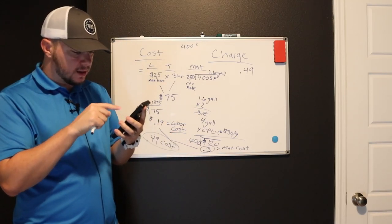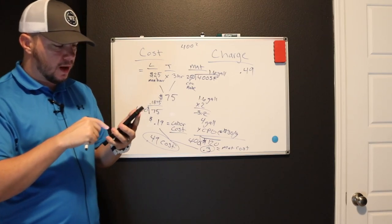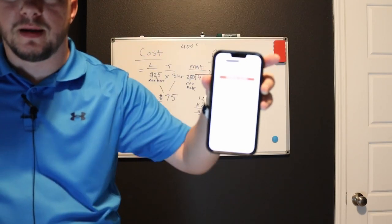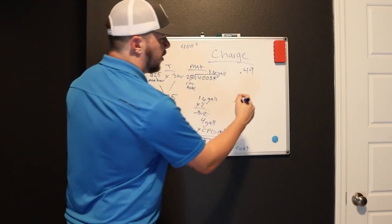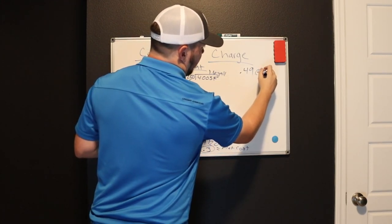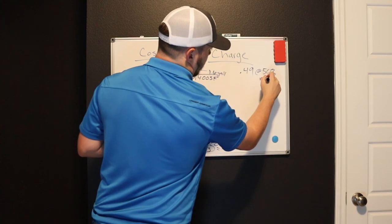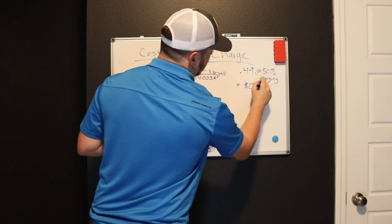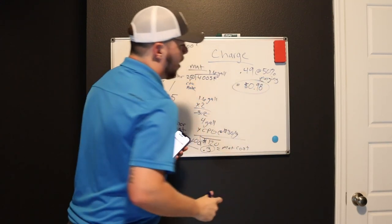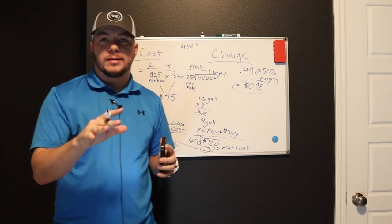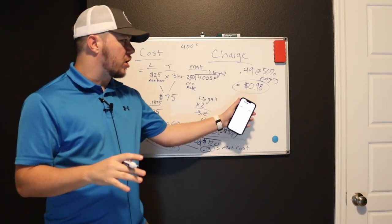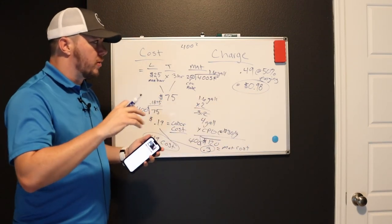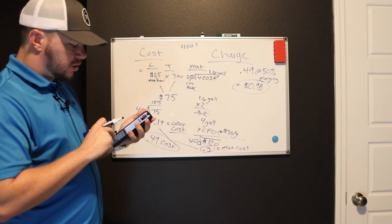If you're making 98 cents per square foot, so 49 cents at 50% margins equals 98 cents a square foot is what you need to charge for just walls. But seeing as this is not a residential we're talking about, we're talking about painting.